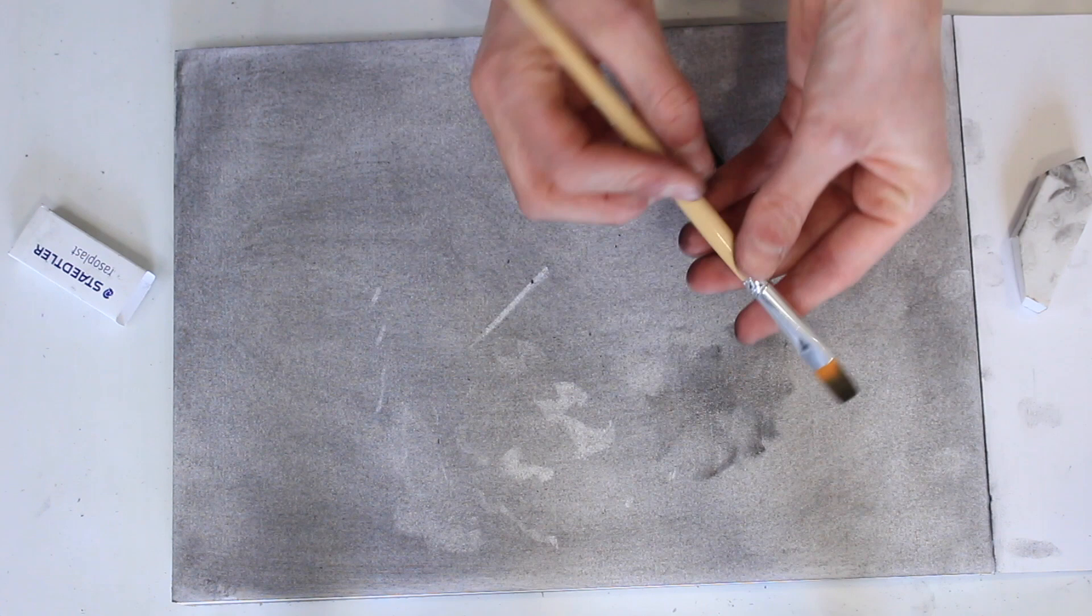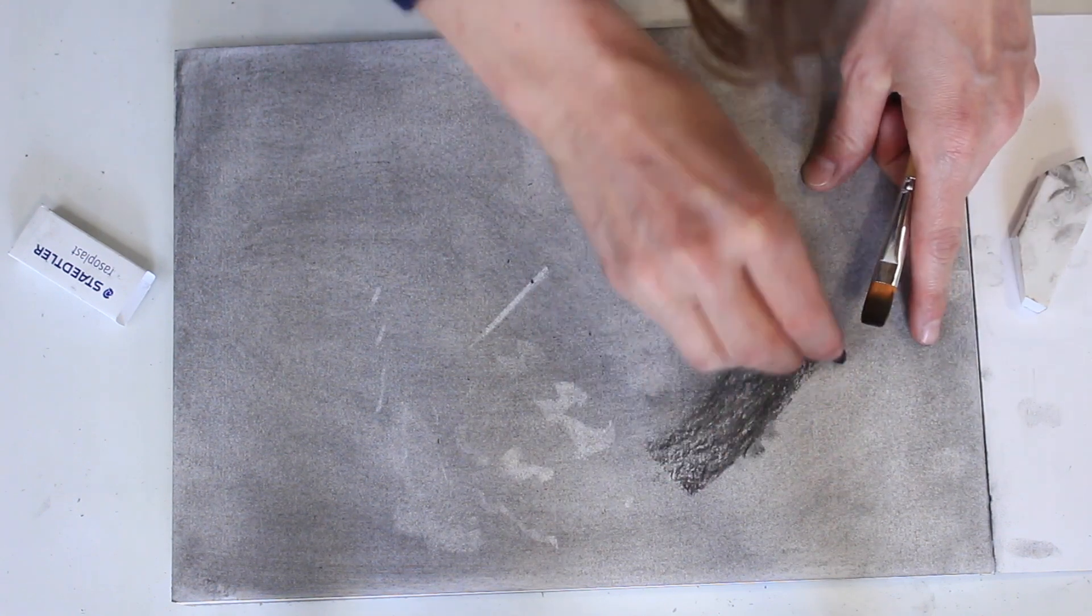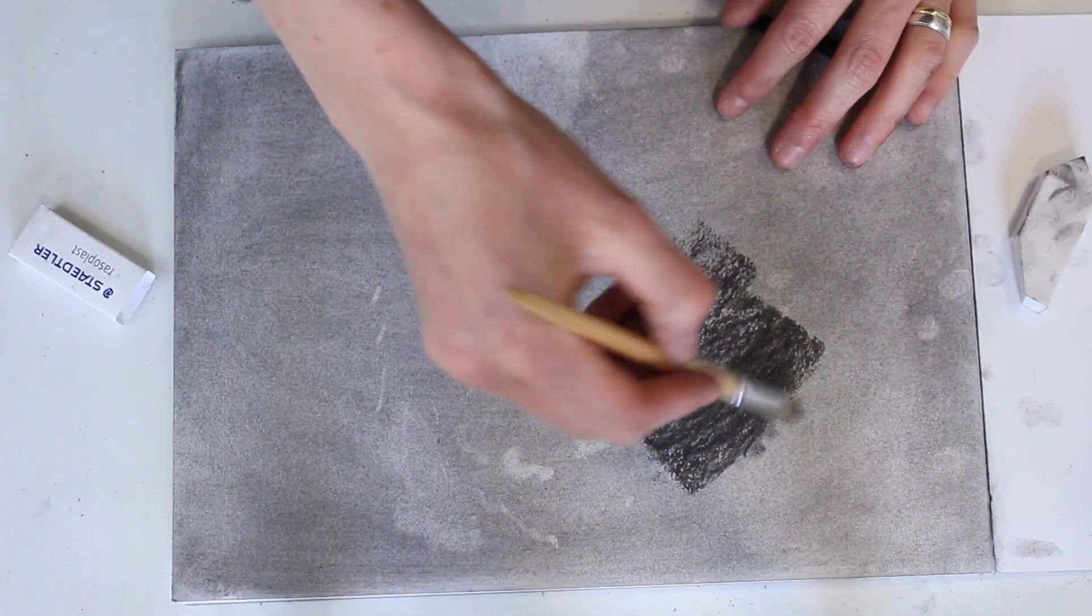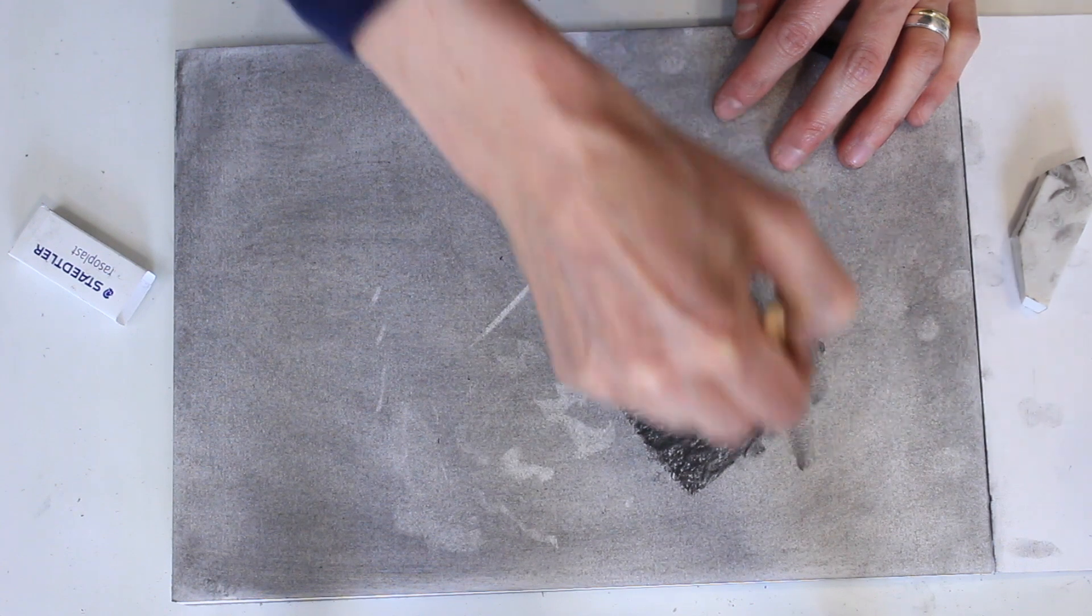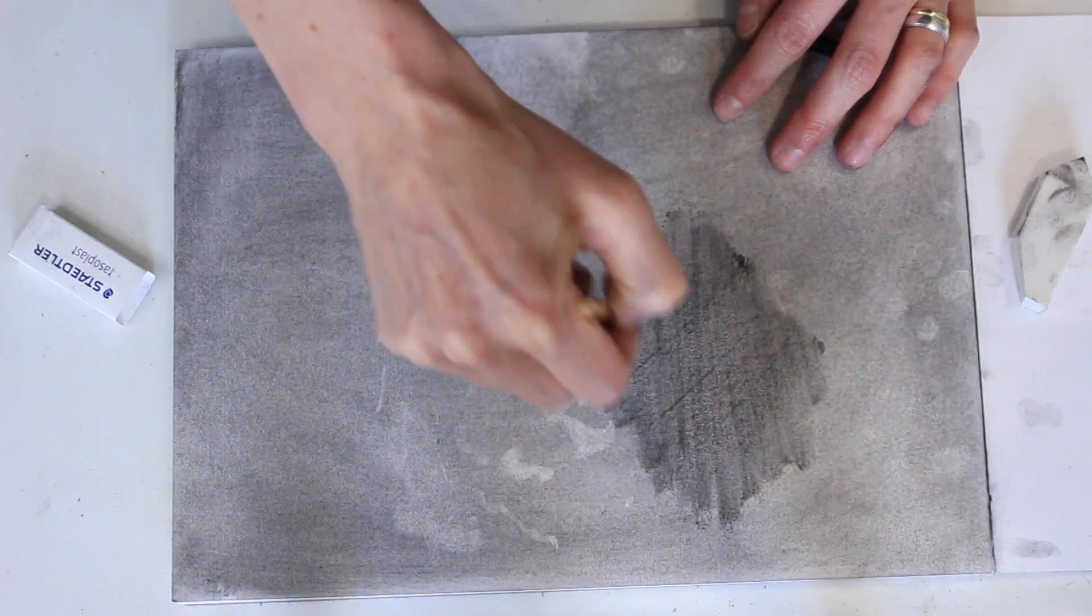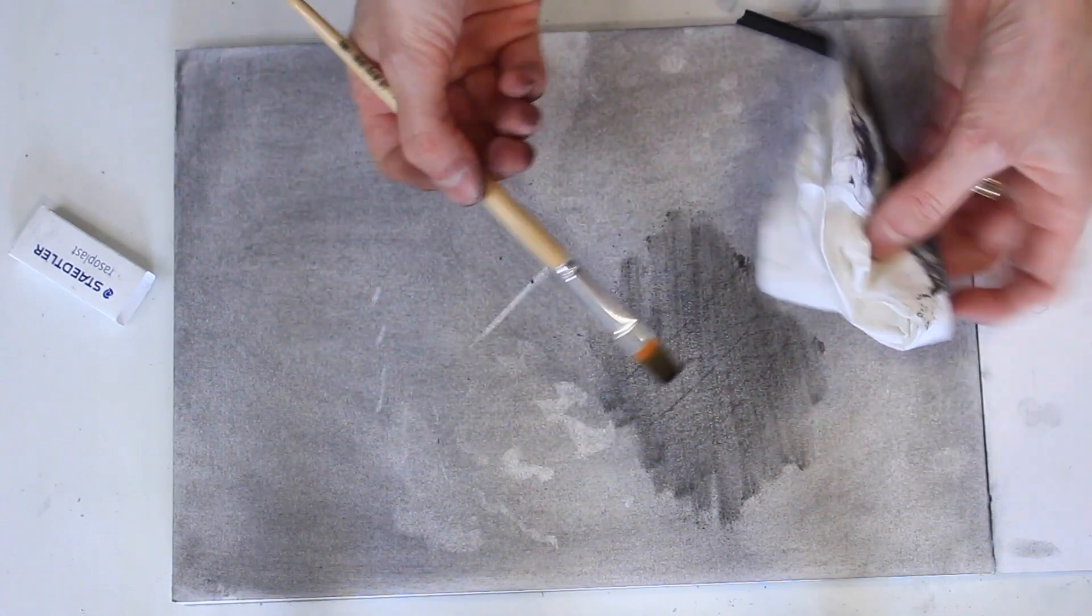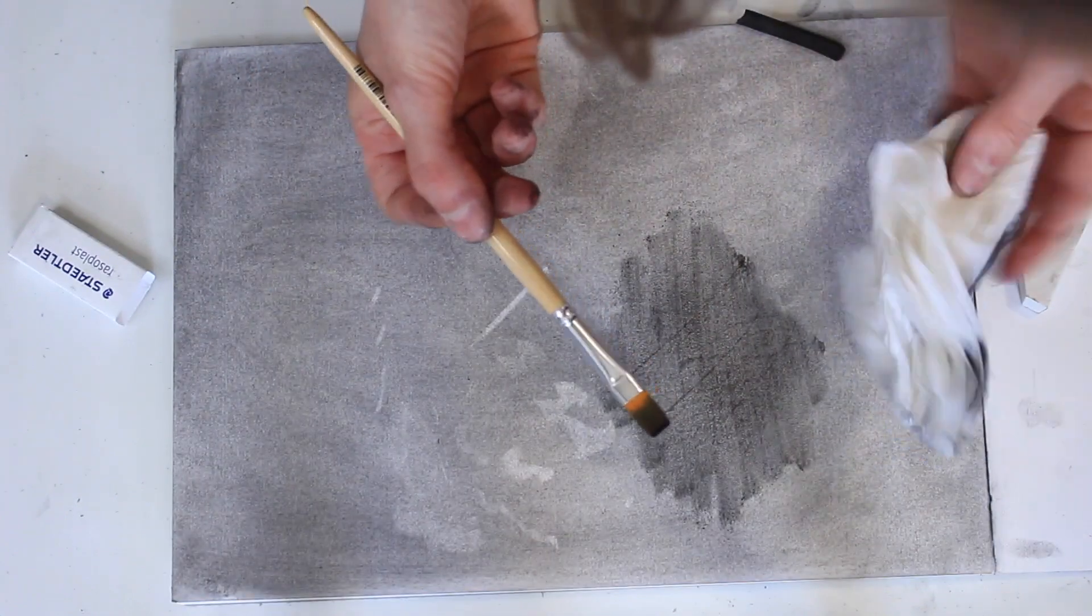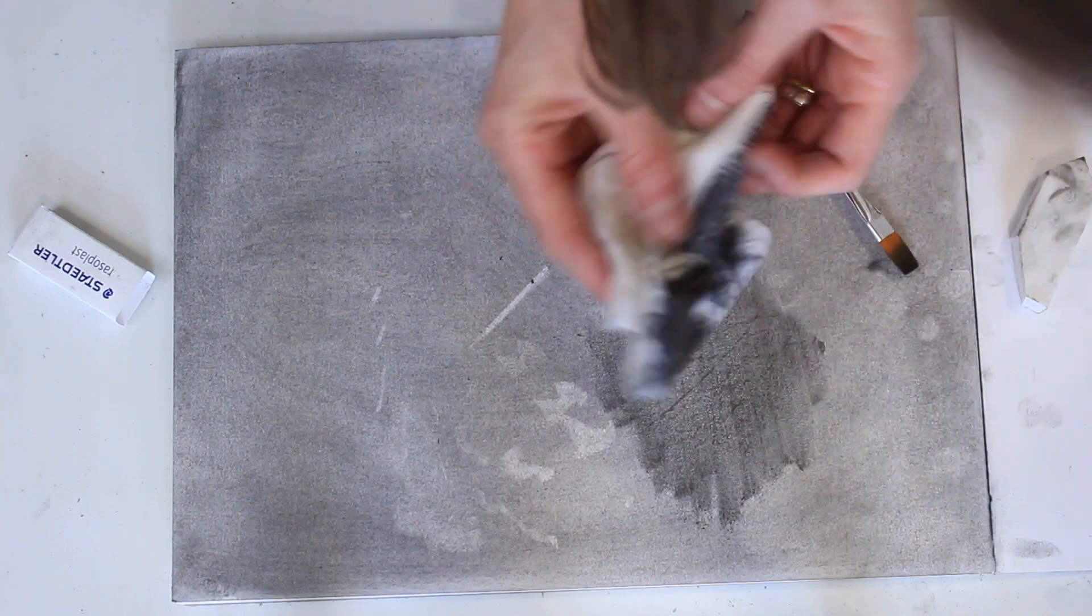So that's just an example. And the other thing that the paintbrush is great for is rubbing your image away. If you've made a mistake or if you want to soften something that you've shaded, you can just move the charcoal with the brush. So it has a little bit of a different blending style than the tissue.